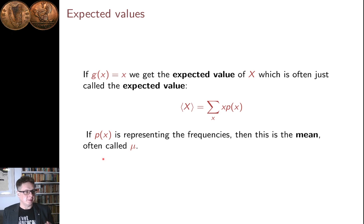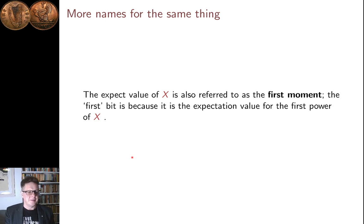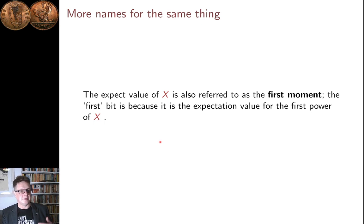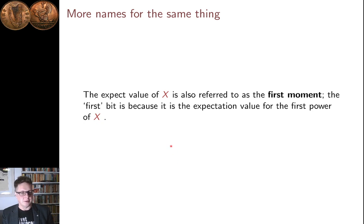The probabilities are often used to represent frequencies — we often use probability to represent the outcomes of some process. And if p(x) represents the frequencies, we often refer to the expected value as the mean, and use the Greek letter mu to represent the mean. The expected value of X — the angle bracket of X — is also sometimes called the first moment. It's called the first moment because the power is one: it's x to the one, the first power of x. So the first moment is the expected value of the first power of x.